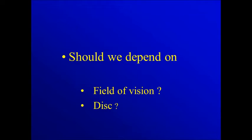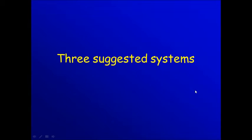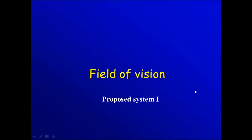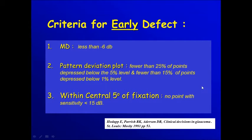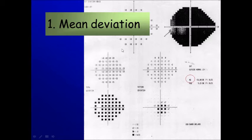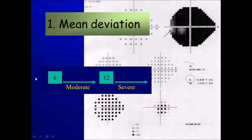To evaluate the amount of damage, we can depend on the field of vision and on disc evaluation. There are several methods that we can check the field with. The first one was published back in 1993. One of the important and easy things to do is the mean deviation. If the mean deviation is below six, it's mild glaucoma. If it's between six and twelve, it's moderate, and if it's more than twelve, it's severe glaucoma.